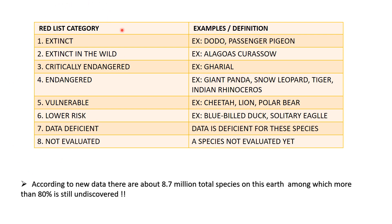The IUCN categories - definitions aur examples aapko pata hone chahiye, aur inke beech difference bhi poochha jaata hai. First one is Extinct - lupt ho jaana. When there is no reasonable doubt that the last individual of that species has died - jis bhi species ki baat karo, uska last individual is duniya mein nahi hai, mar chuka hai, woh prajati bilkul lupt ho chuki hai. Example is dodo - a flightless bird - and passenger pigeon, also called wild pigeon. The word 'passenger' comes from French as they are migratory in nature. Both are completely extinct from the world.